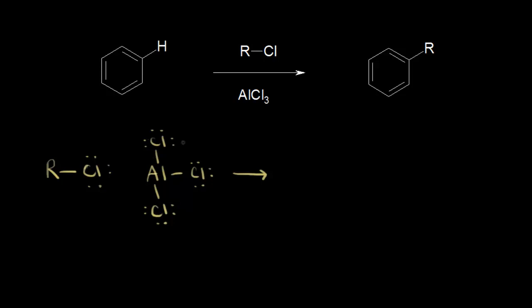Let's look at the reaction for Friedel-Crafts alkylation. We start with our benzene ring, and we're going to add an alkyl chloride. Our catalyst is aluminum chloride. The end result is to substitute an R group — the R group that was on the alkyl chloride — for a proton on the aromatic ring.